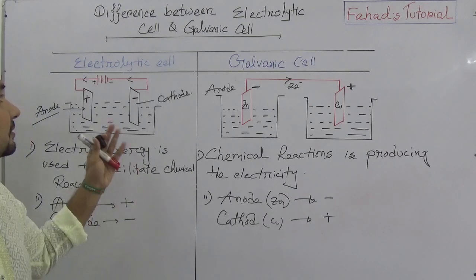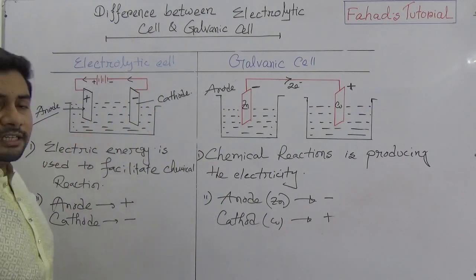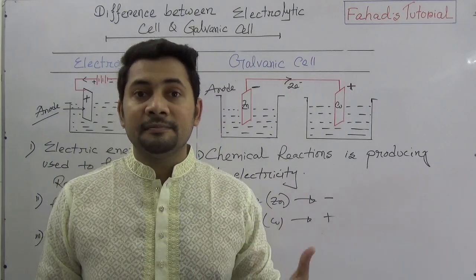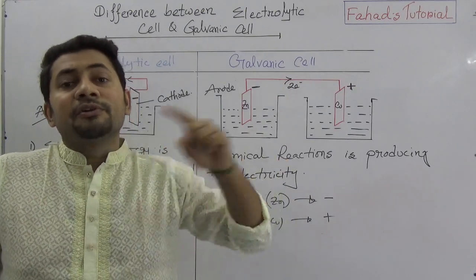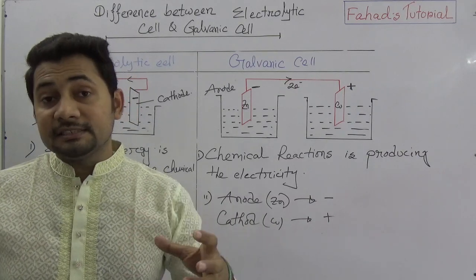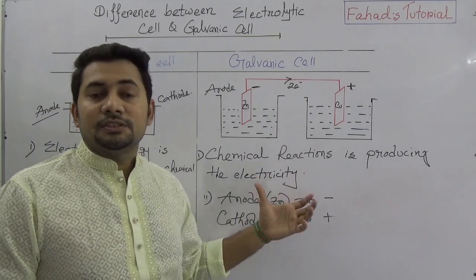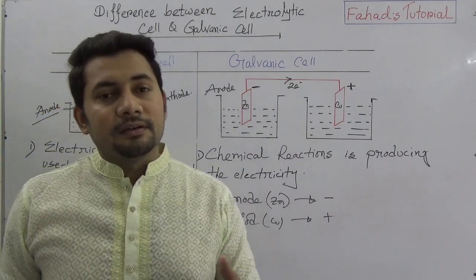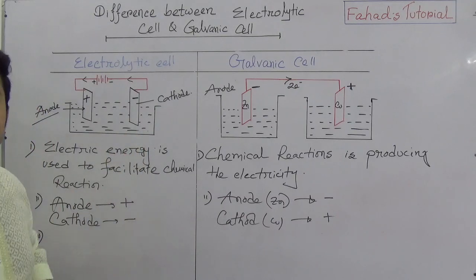The third difference is the function. The electrolytic cell is used for metal purification and electroplating. These are the processes carried out by electrolysis. But in the galvanic cell, it is actually an electricity-producing mechanism — it is the concept behind a battery. I have already explained the mechanism and structure of a dry cell, which is based on the galvanic cell concept. In the electrolytic cell, metal purification and electroplating are the main functions.